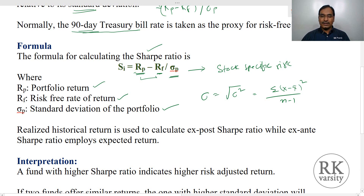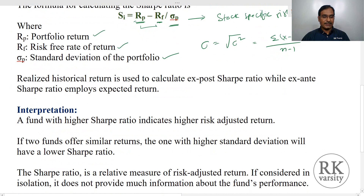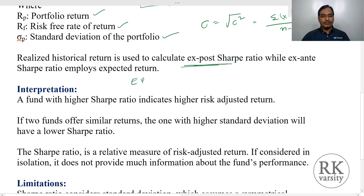Standard deviation is the stock-specific risk. When calculating a Sharpe Index using historical data, that is ex-post data, we call it the ex-post Sharpe Ratio. If you are calculating Sharpe Ratio using expected return, we call it the Sharpe Ratio of expected return. So the Sharpe Ratio can be calculated for both ex-post as well as ex-ante or anticipated expected returns.